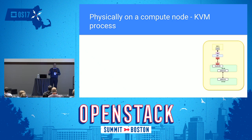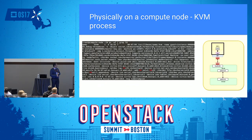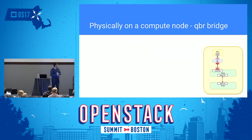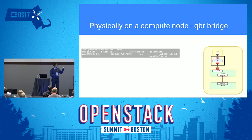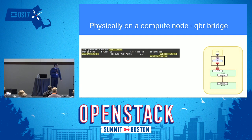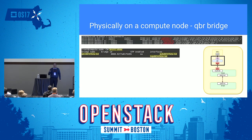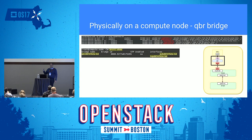Physically, if you run `ps -ef` on a compute node, you'll find the QEMU/KVM process with a `--netdev tap` device, file descriptor, and MAC address. Using `brctl show`, you'll see QBR bridges each with two interfaces: the QVB and the TAP interface. Running `iptables -L` and grepping for the TAP interface name, you'll find a specific security group chain created for that TAP interface, confirming that traffic is filtered at the TAP using iptables rules.